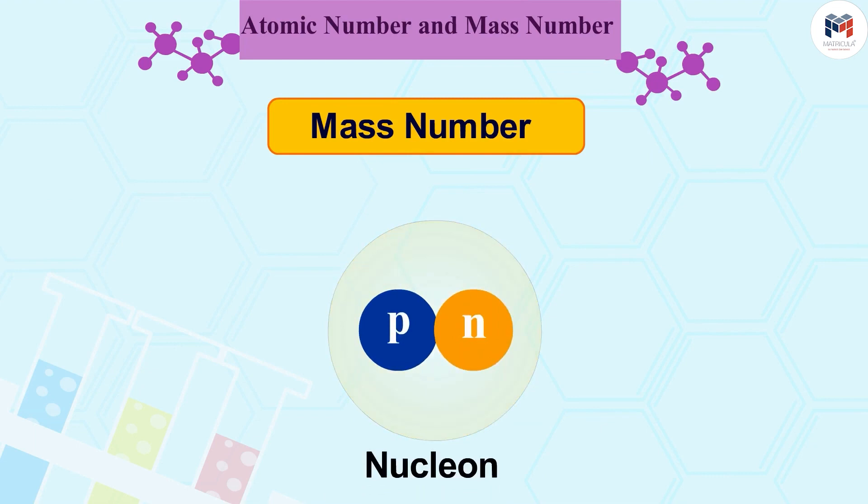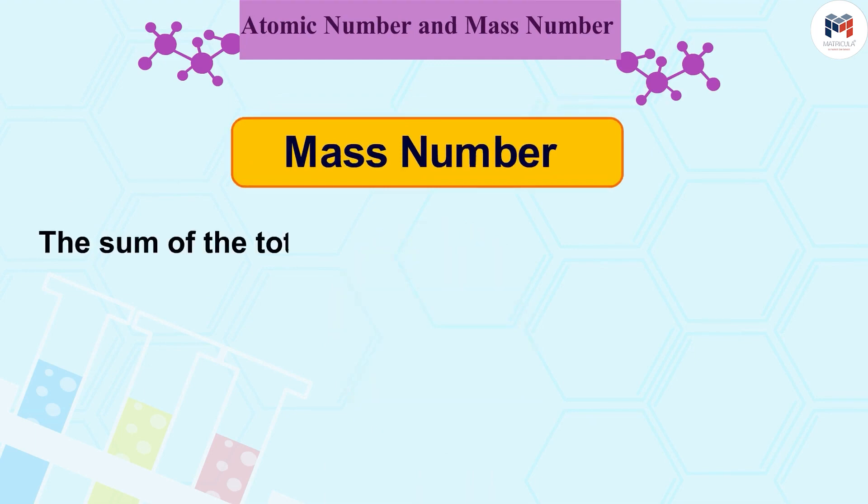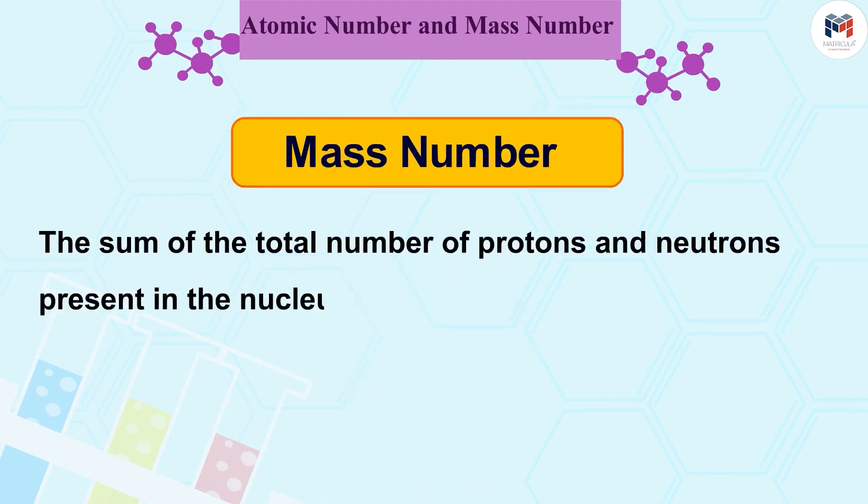Hence, protons and neutrons are also called nucleons. The sum of the total number of protons and neutrons present in the nucleus of an atom is called mass number.